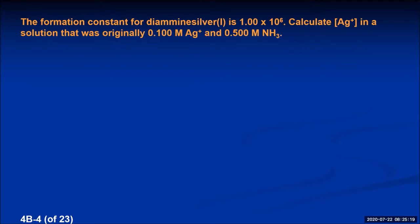Let's look at another example using formation constants. The formation constant for diamine silver one is 1.00 times 10 to the sixth. Calculate the silver ion concentration in a solution that was originally 0.100 molar silver ions and 0.500 molar ammonia. This is different from the previous problem — they gave us concentrations at equilibrium before, but here we're given original concentrations. The reaction is going to reach equilibrium, and we want to know the silver ion concentration there. This type of problem requires an ICE table.